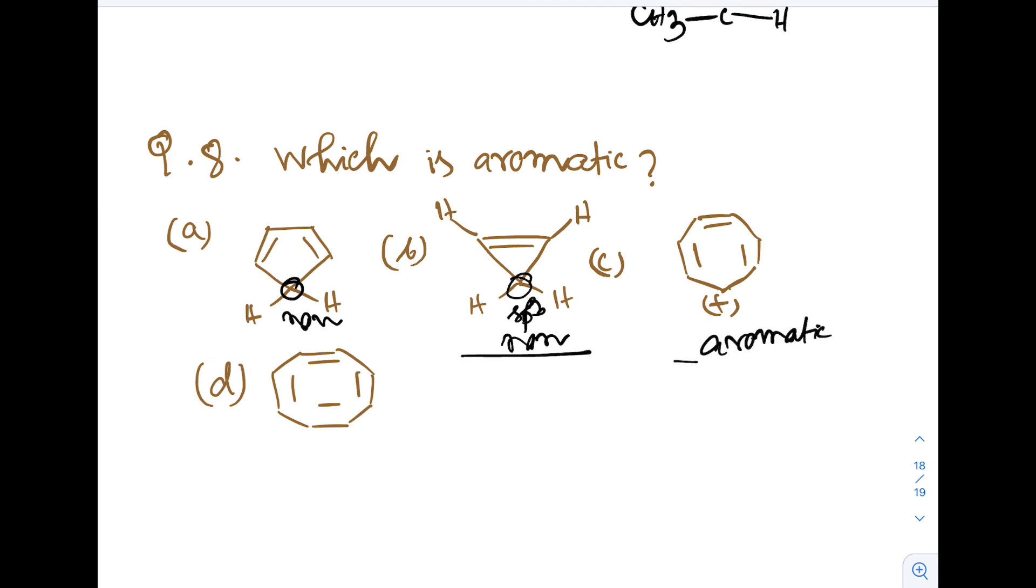Cyclotropylium ion, because here 6 pi electrons are present, cyclic conjugation is there, and it's planar because all carbon atoms are SP2 hybridized. The last one is COT, cyclooctatetraene, which has tub-shaped structure and is non-planar, hence non-aromatic. Cyclotropylium ion, option C, is the correct answer.